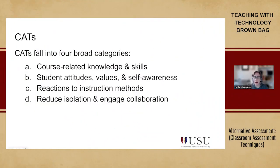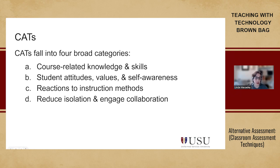Since we do have a good number of folks learning about CATs for the first time, we want to make sure we give that background information. Classroom assessment techniques, or CATs, fall into four broad categories. Each CAT you choose is used for particular purposes: course-related knowledge and skills, student attitudes, values and self-awareness, reactions to instruction methods, or to reduce isolation and engage collaboration. Whether you use CATs as activities or assessment, it will help you and your students get feedback on the teaching and learning process as it's happening.